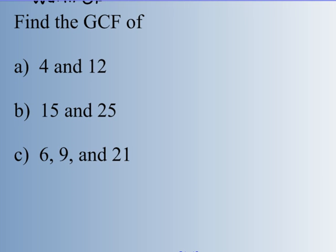What is the greatest common factor of 4 and 12? You might think 2 at first, but the greatest would be 4. 15 and 25 — greatest common factor? 5. They both end in 5. 6, 9, and 21 — I can find all of those in my threes tables, so their greatest common factor is 3.